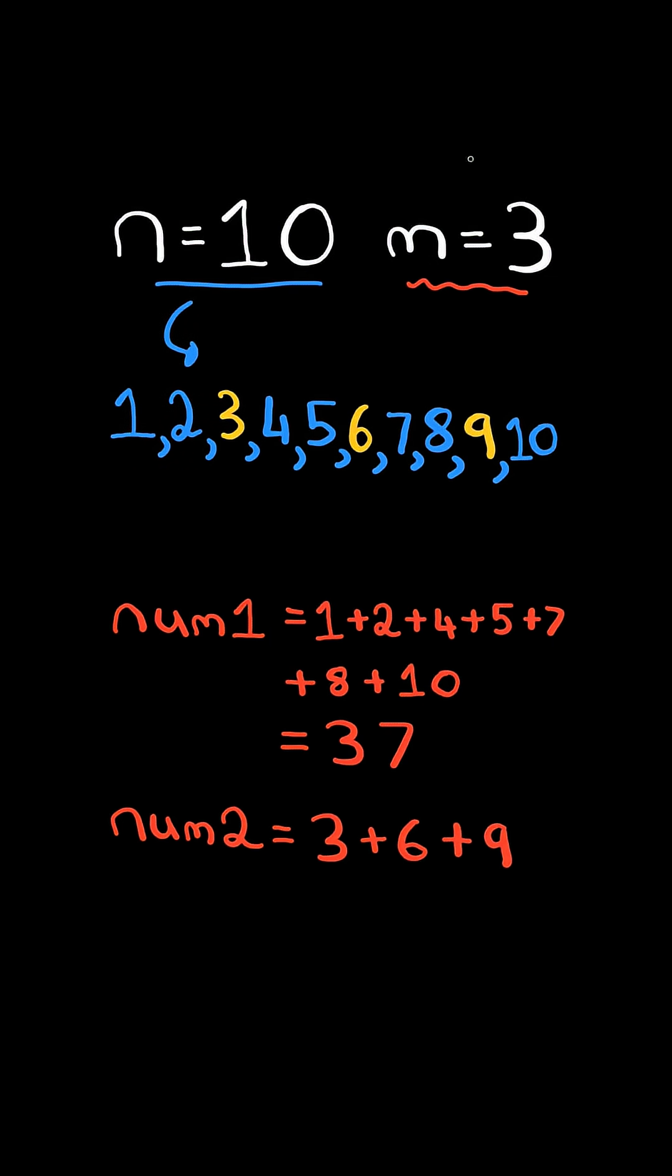And calculate num2: consider all the numbers that are divisible by m and sum them together. At the end, return the difference of num1 and num2.